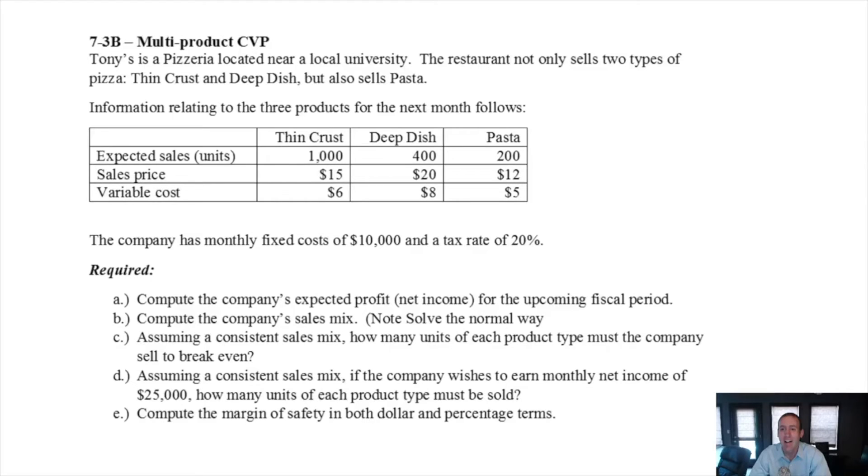Let's jump into the problem. Let's have a look at problem 73B, another multi-product CVP problem. I'll try to move a little bit more quickly this time. Tony's is a pizzeria located near a local university. The restaurant not only sells two types of pizza, thin crust and deep dish, but also sells pasta.